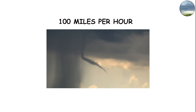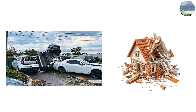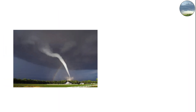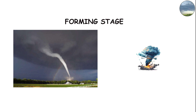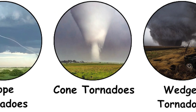Interestingly, a rope tornado can still contain wind speeds over 100 miles per hour — enough to flip cars or tear roofs apart. Their slim appearance doesn't mean they're harmless. It simply reflects the weakening or forming stage of the larger tornado system.